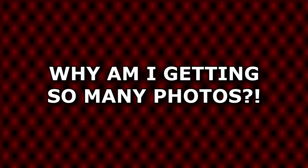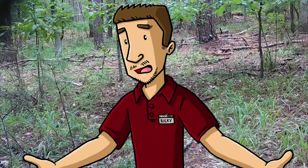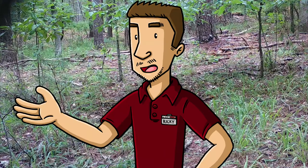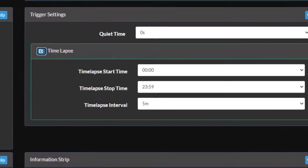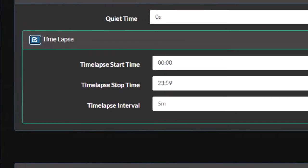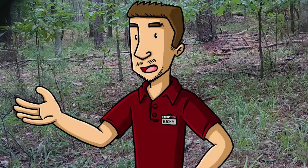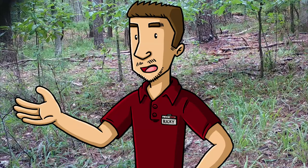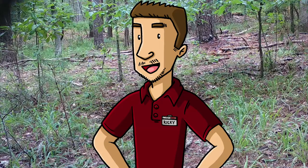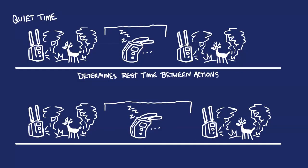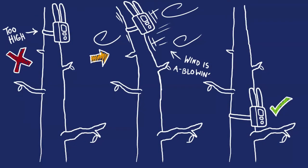Why am I getting so many photos? Your camera can be triggered by motion and by a time lapse setting. Check time lapse to see if it's enabled and what it's set for to make sure this isn't the problem. If you're getting too many motion triggers, there are a few things you can try. Increase quiet time to have the camera rest longer in between events. Alter your mounting strategy, as your camera may not be completely secure and can be moved around by wind or other forces.